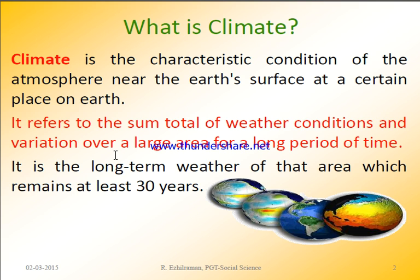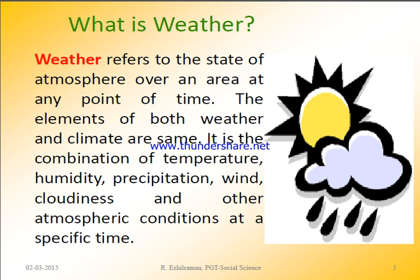Climate refers to the sum total of weather conditions and variations over a large area for a long period of time. In the morning a different weather will be there, afternoon different, night different — weather keeps changing. Climate refers to the sum total of weather conditions over a long time, specifically at least 30 years. The weather condition that is most prevalent over those 30 years determines the climate of that place.